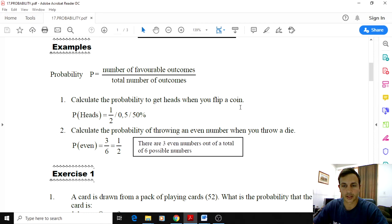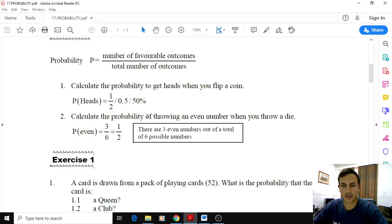Another example here. Calculate the probability of throwing an even number when you throw a die. There are three even numbers on a die: two, four, and six. So there are three favorable outcomes out of the total six, and that is three out of six. But you must always simplify your answers to its simplest form if possible, so in this case it'll be one over two.